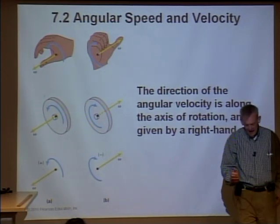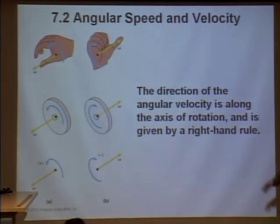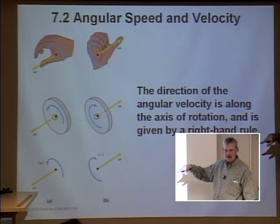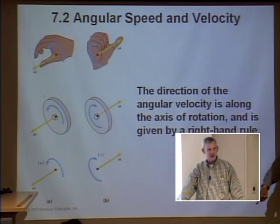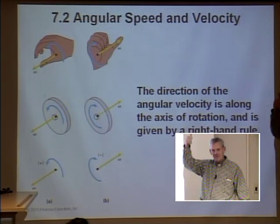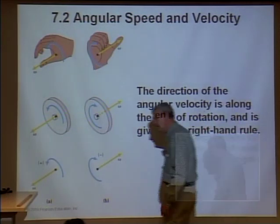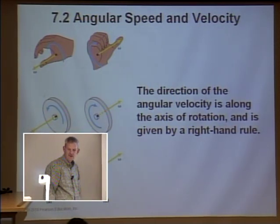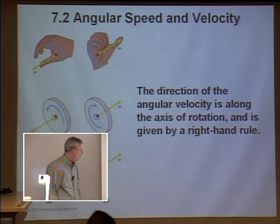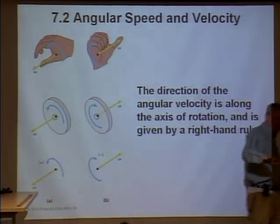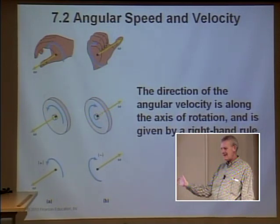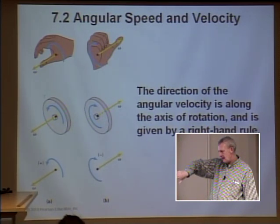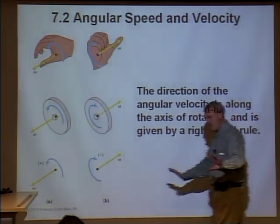If you spin something fast enough — like those fireworks you nail to the tree — the vector pointing up causes it to spin and go upward. If you turn it over, it digs into the ground. The convention is: counterclockwise is positive because going x cross y gives a positive z, and that's counterclockwise. Clockwise — y cross x — goes in the negative z direction, so that's negative.